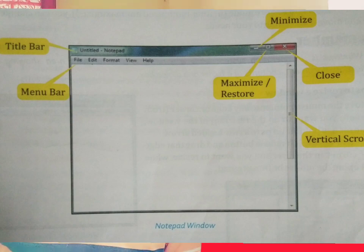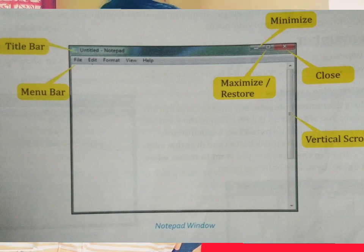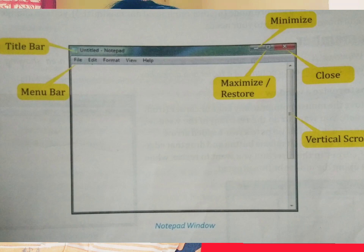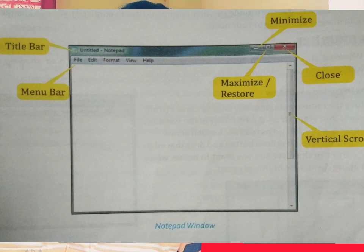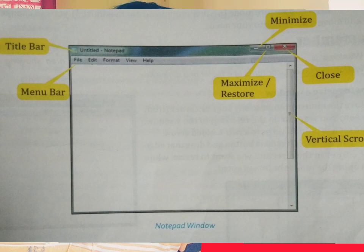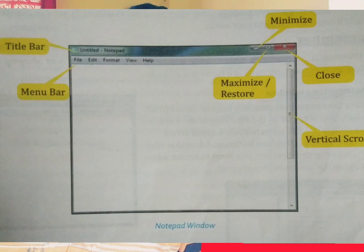The Minimize button is the first button in the top right corner with a minus symbol on it; it reduces the window to a small icon on the taskbar. The Maximize button, next to the Minimize button with a square box icon, helps to either maximize or display the window in its normal size. The Close button is the last red button with a cross symbol, which helps you close the window.